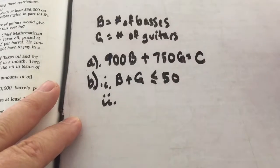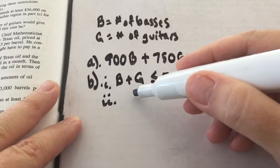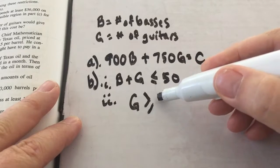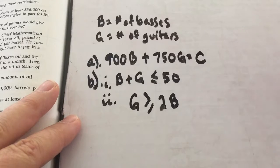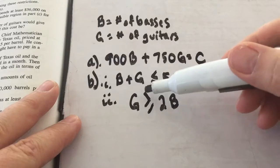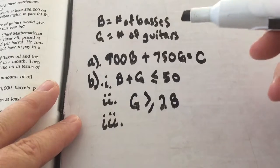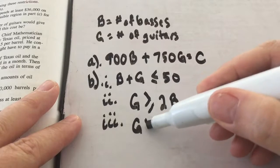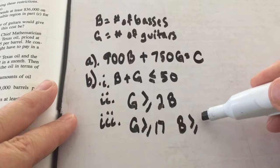Constraint II says that because guitars are more popular than basses, the number of guitars must be at least twice the number of basses. 'At least' means greater than or equal to, so G ≥ 2B. Think of a roller coaster height requirement — you must be that tall or more. Constraint III says to get started he must buy at least 17 guitars, so G ≥ 17, and at least five basses, so B ≥ 5.